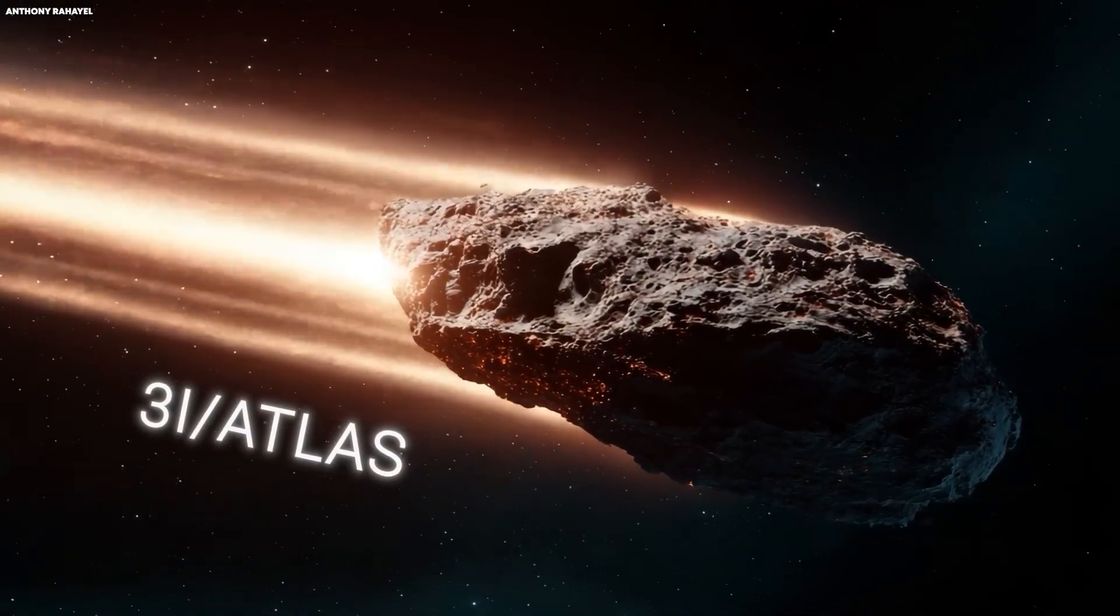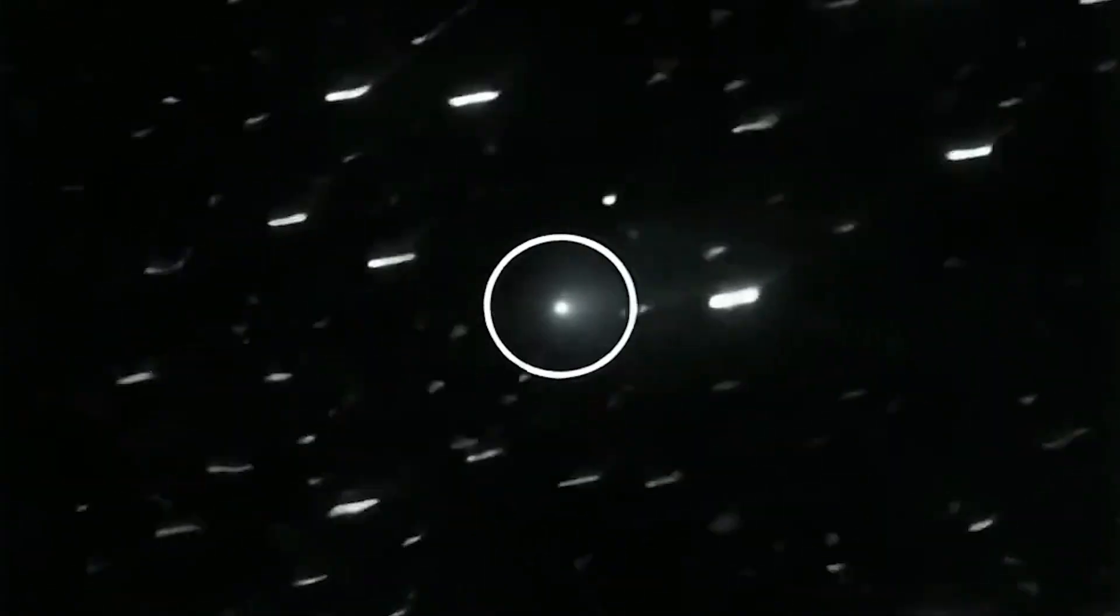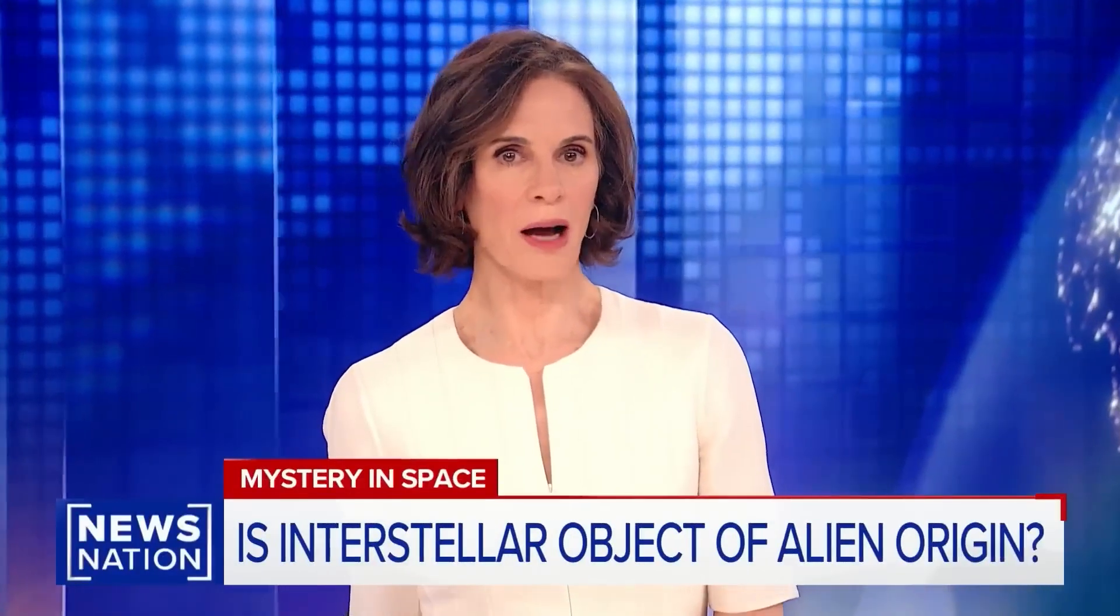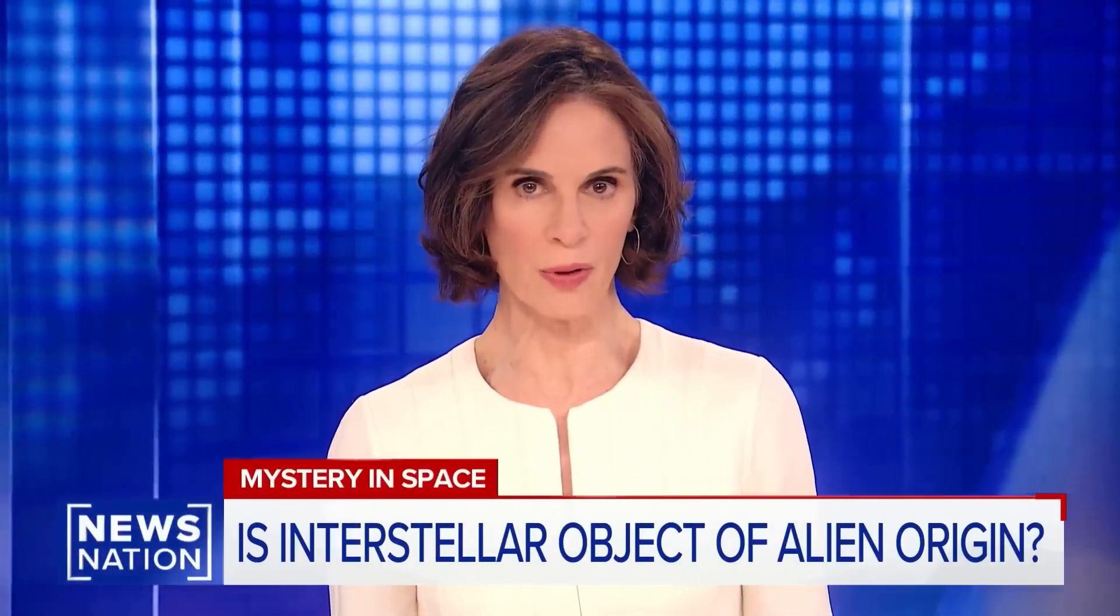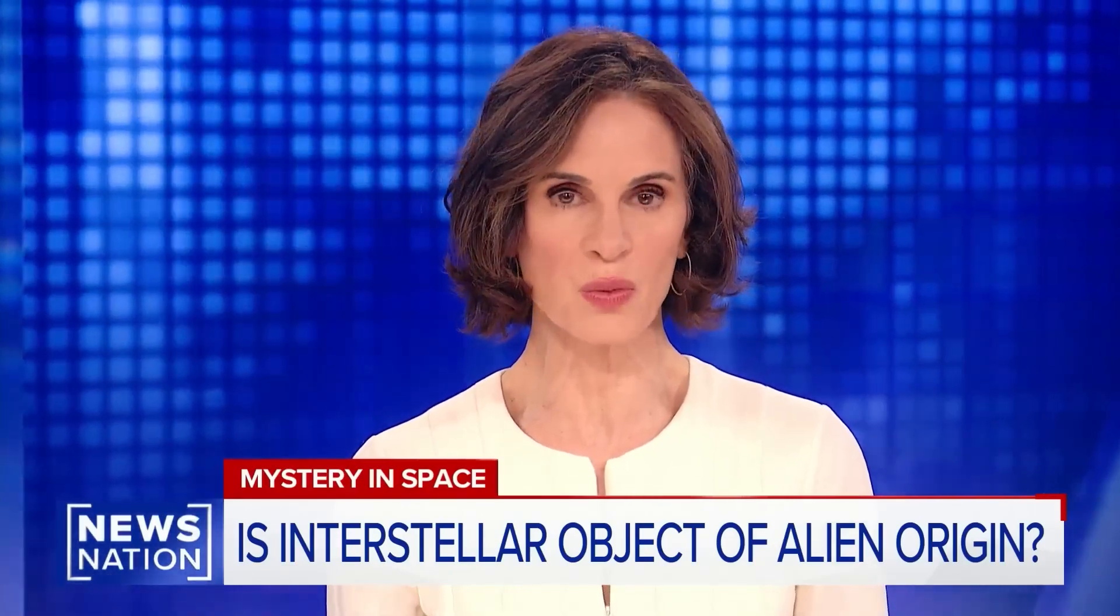This object, called 3I Atlas, has been shooting through our solar system faster than almost anything we've ever tracked. What if an interstellar object whirling through our solar system is actually a nuclear-powered spacecraft sent by aliens to test how humans respond?